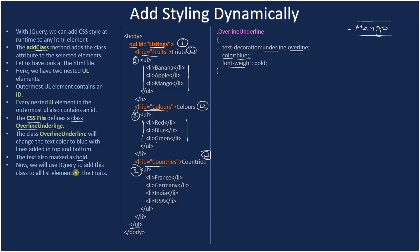Now we will use jQuery to add this class to all list elements in the fruits section. We can use the ID — all fruits are placed inside a UL enclosed by a list item that has id='fruits'. We pick that ID, select all the list elements, and apply the overline/underline class to them.